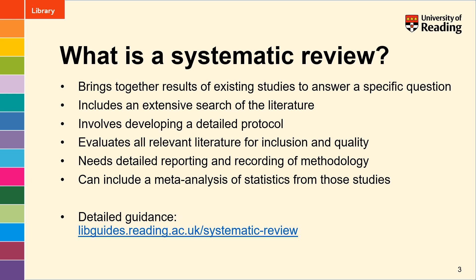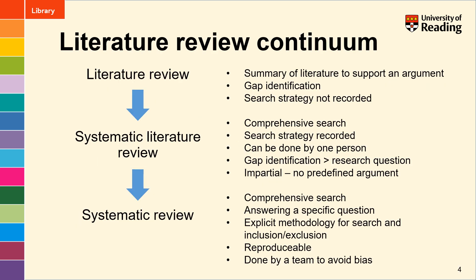For more detailed guidance on all the steps involved in doing a systematic review have a look at our guide. A systematic review fits in on the scale of literature reviews. The most basic level of literature review would include a summary of the literature usually to try and support a predefined argument. It can also be used to identify gaps in the research that could be addressed by future research, and in a basic literature review the search strategy is not usually recorded.